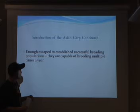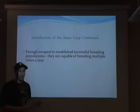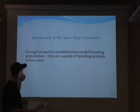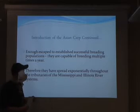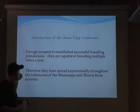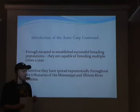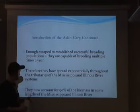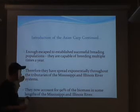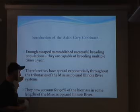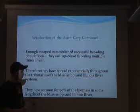Enough escaped to establish successful breeding populations. Capable of breeding multiple times a year, they have spread exponentially throughout the tributaries of the Mississippi and Illinois river systems, and now account for 90% of the biomass in some stretches of those rivers.